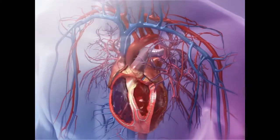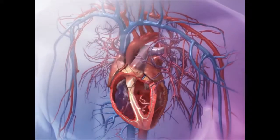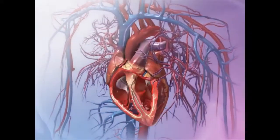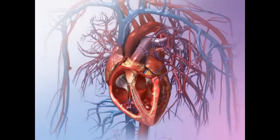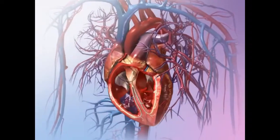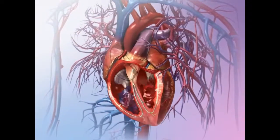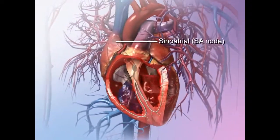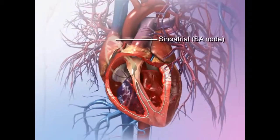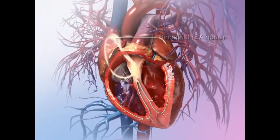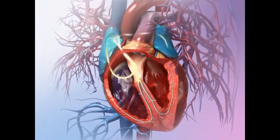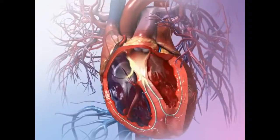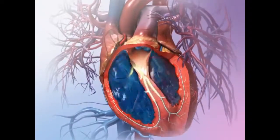The heart's conduction system regulates the electrical impulses that make the heart beat. An impulse begins in a bundle of nerve tissue called the sinoatrial, or SA node. The impulse makes the atria contract, and blood empties into the ventricles.